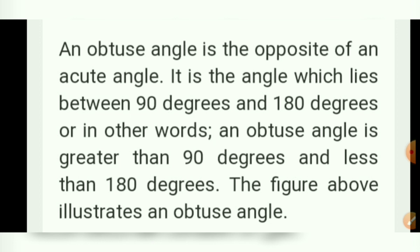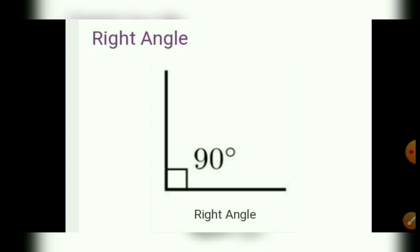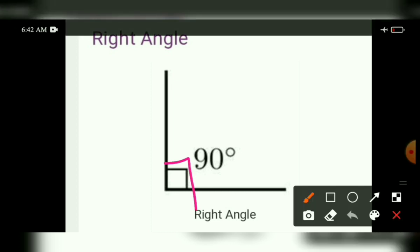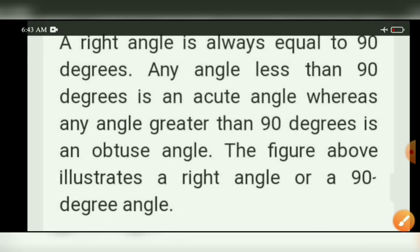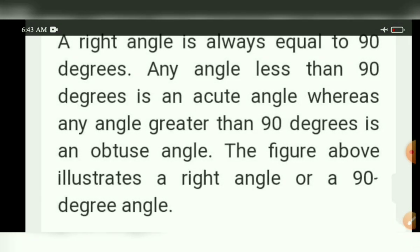An obtuse angle lies between 90 degrees and 180 degrees. Right angle: an angle whose measure is exactly 90 degrees is called a right angle. Any angle less than 90 degrees is called an acute angle, and any angle greater than 90 degrees is called an obtuse angle.